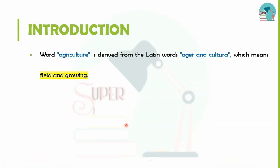First, let's go to the introduction. How do you describe agriculture? It's a Latin word — Ager and Cultura. Agriculture is derived from that word, meaning 'yield and growing'.